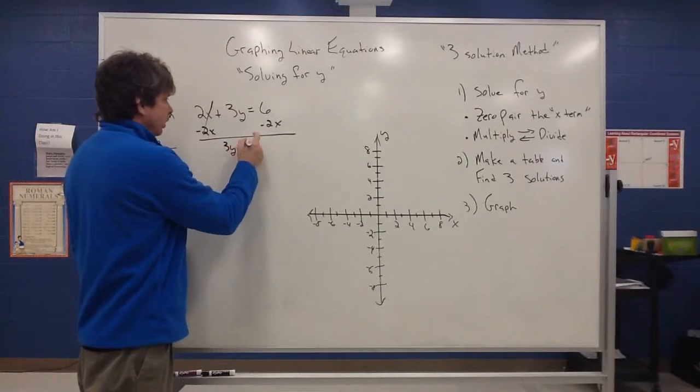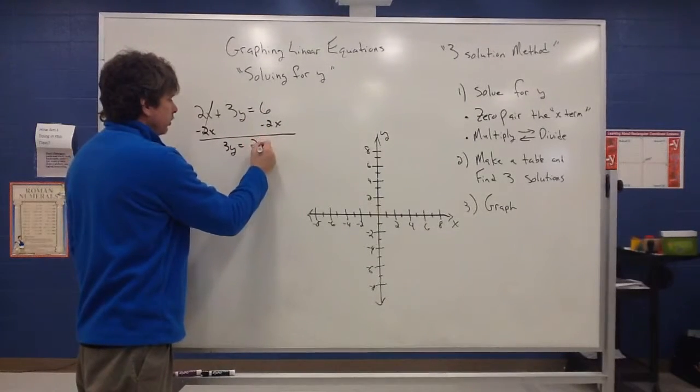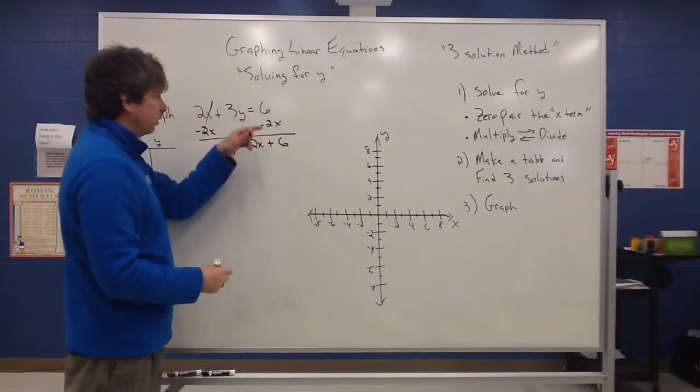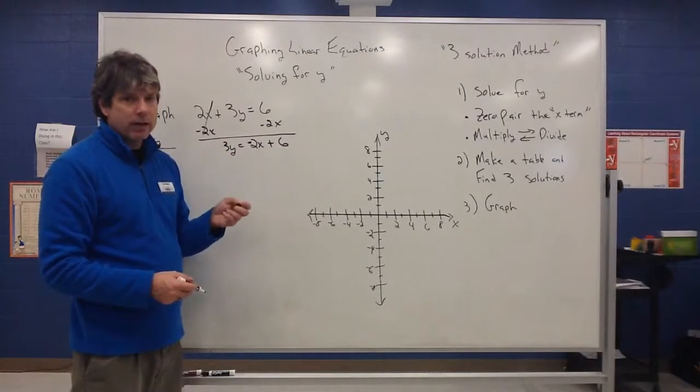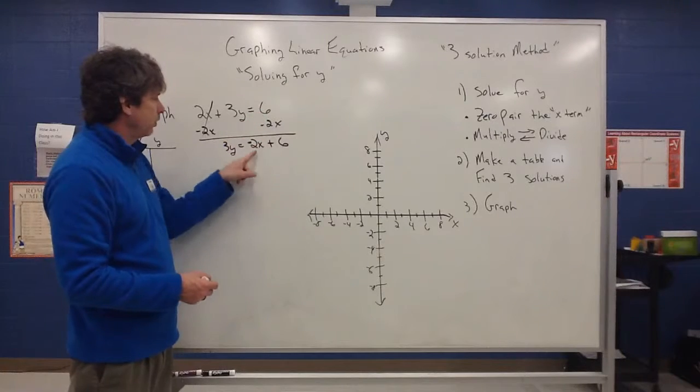So 2x and negative 2x are going to zero out. My 3y comes down. And since these aren't like terms, I have a negative 2x and a 6. Since those aren't like terms, we just put them together. And remember when I say the word and, that does imply the addition symbol. So I have a negative 2x and a 6.